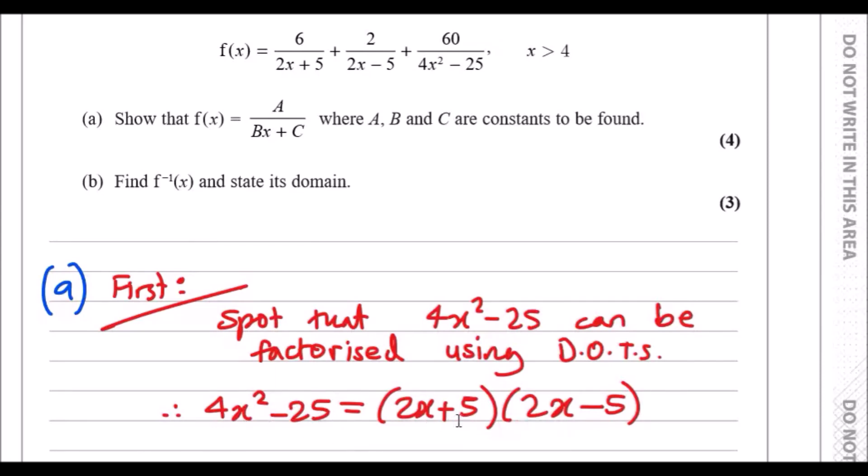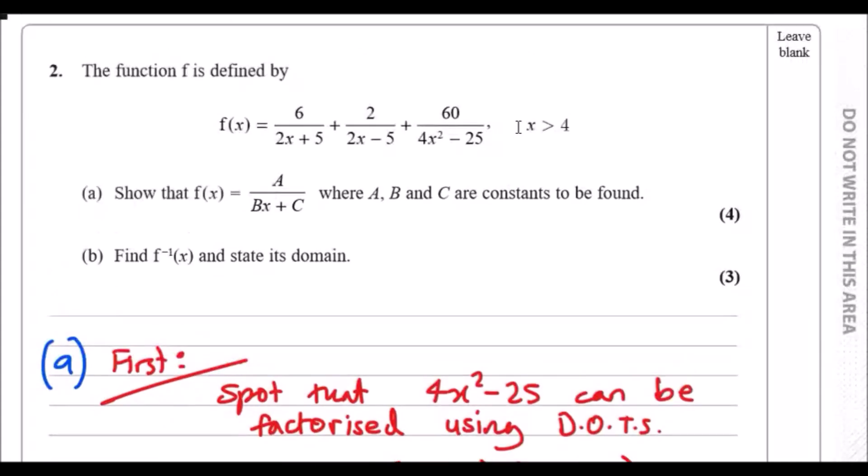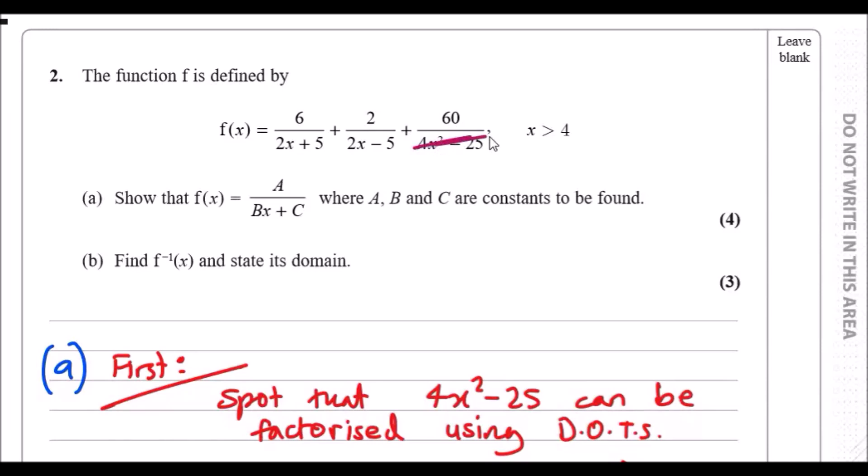This is literally a difference of two square numbers with 4x squared being one square number and 25 being another. So this is something we have to literally spot from the get-go, otherwise you could make a really big mistake. Now that's all right, so when you do that you'll realize that in fact this little bracket here is actually made up of 2x plus 5 and 2x minus 5.